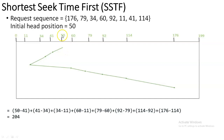In SSTF, whichever request sequence is nearest to the initial position gets visited first. With 50 as the initial position, you check which one has the shortest seek time — 50 has to travel either to 41 or 60, and the shortest seek time from 50 is 41. So from 50 you travel to 41. From 41 you check whether 34 or 60 is closer — obviously the shortest seek time is 34. From 34 it goes to 11. Since 11, 34, 41, and 50 are already visited, from 11 you go to 60.